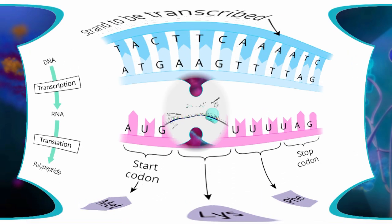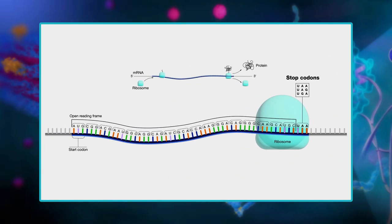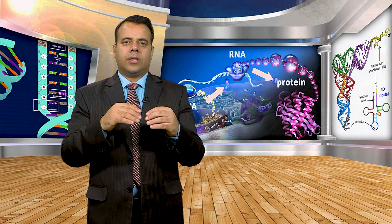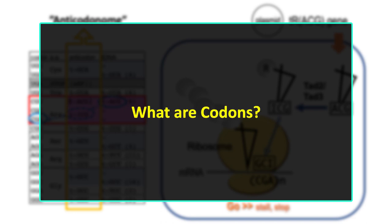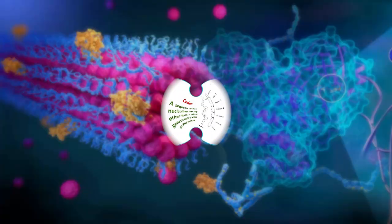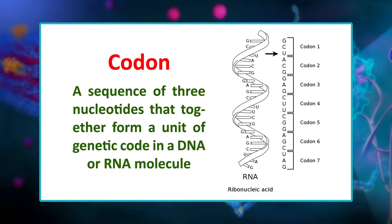There are three stop codons — UAA, UAG, and UGA — that do not specify amino acids; they tell the cell when a polypeptide is complete and protein synthesis must be terminated. This collection of codon–amino acid relationships is called the genetic code, because it lets cells decode an mRNA into a chain of amino acids. Cells decode mRNA by reading their nucleotides in groups of three called codons. A codon is a sequence of three nucleotides which together form a unit of genetic code in a DNA or RNA molecule.